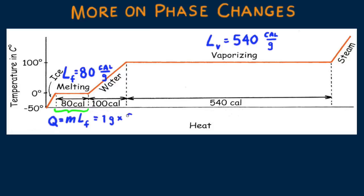Which for 1 gram equals 80 calories. Or for 2 grams the quantity of heat would be twice as much, 160 calories. For M grams in general the quantity of heat needed for the phase change from solid to liquid is ML sub F.